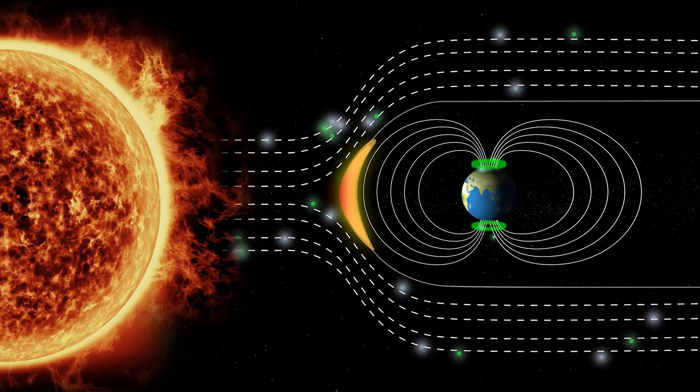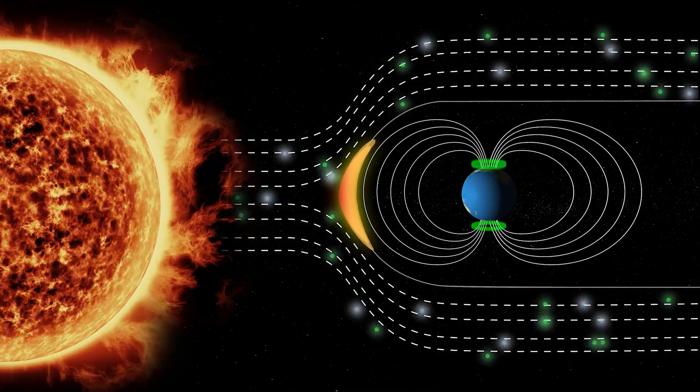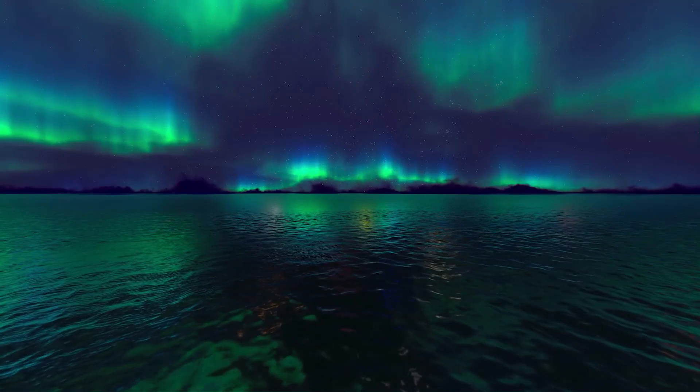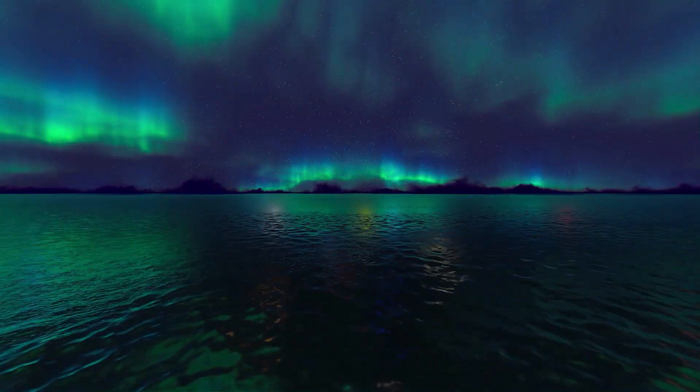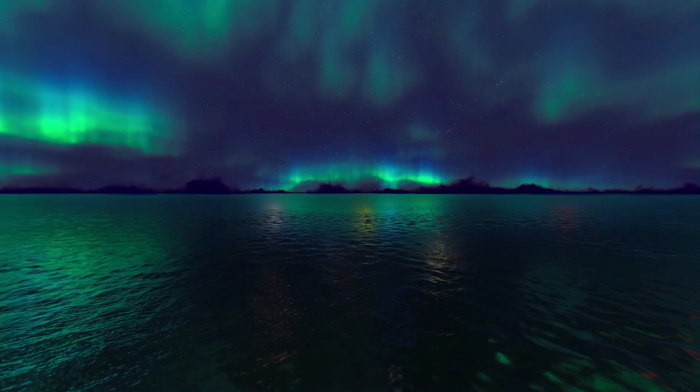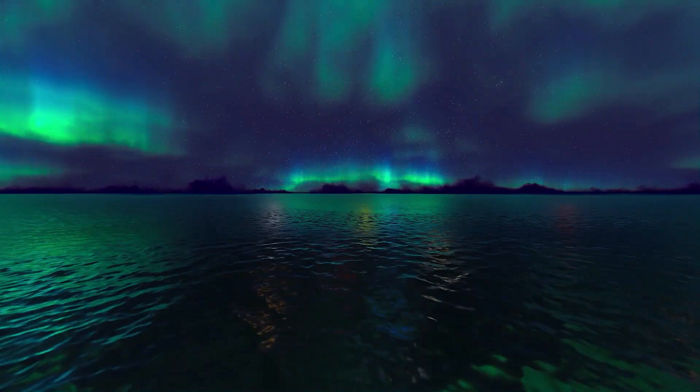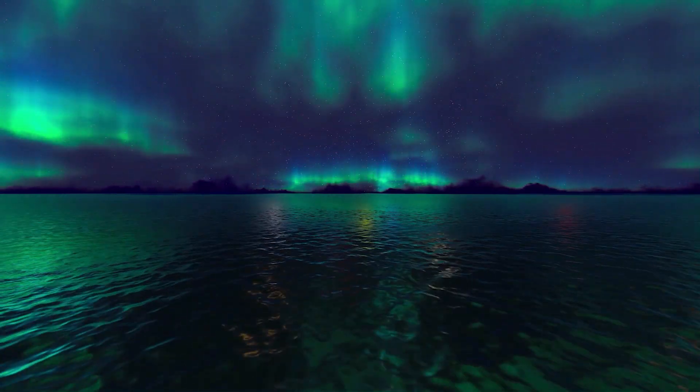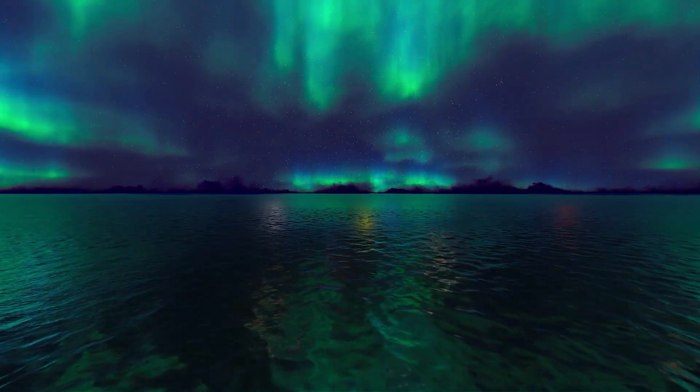Notice some of those green particles collect on the tops and bottoms of the Earth. That's what's responsible for this light show, which can be seen as you move towards the north or south pole. What you see here isn't directly the radiation, instead you're seeing the light made by the collisions between charged particles and the atmosphere.